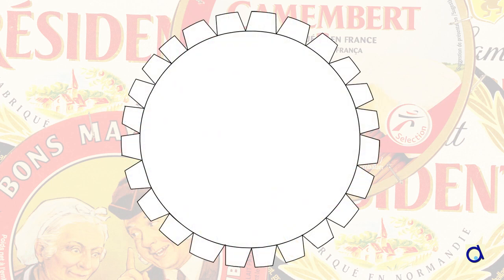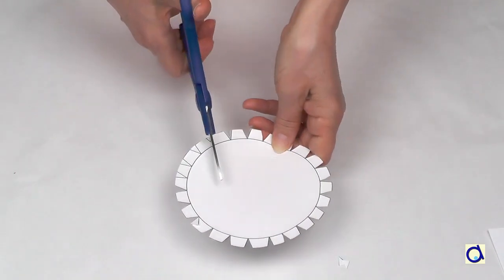Take the pattern of the circle with tabs in the supporting document and print it on cardstock paper. Cut out the pattern.